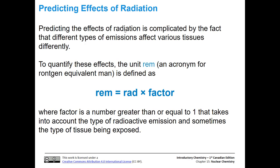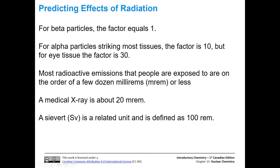Predicting the effects of radiation on the body is also complicated by the fact that different types of emissions affect various tissues differently. The unit REM — an acronym for Röntgen Equivalent Man — is defined as one REM equals RAD multiplied by some factor. This factor is greater than or equal to one and accounts for the type of radioactive emission and sometimes the tissue being exposed. For beta particles, the factor equals one. For alpha particles striking most tissues, the factor is 10, but if they strike eye tissue, the factor is 30.